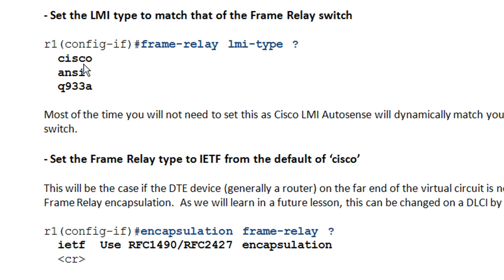The Frame Relay switch will only respond to the LMI type it supports — Cisco, ANSI, or Q933A. Once the Cisco device receives the response, it knows which type to use going forward. This is pretty much handled for you automatically. If you're having problems with your Frame Relay coming up, this is a good place to start troubleshooting — ask your service provider what type of LMI they're running and hard-set it if needed.